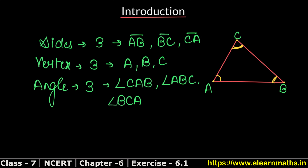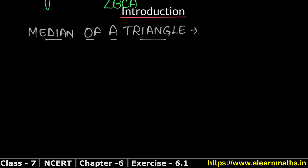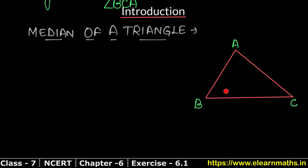Next comes our topic: median of a triangle. In triangle ABC, the median is drawn from a vertex to the midpoint of the opposite side. So from vertex A, we draw a line to point D on BC, where D is the midpoint, meaning AD equals DC. This line AD is called the median.